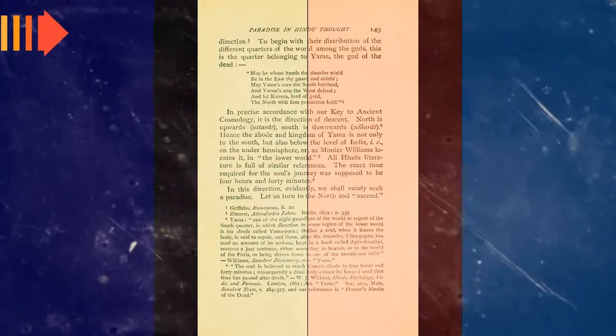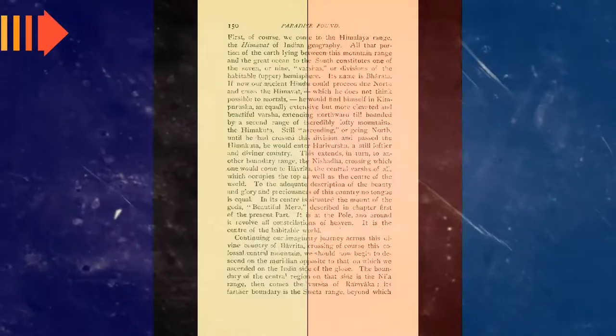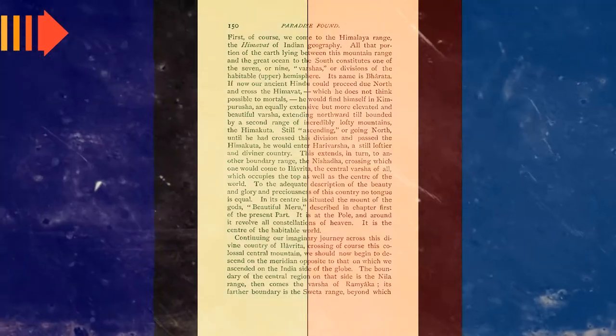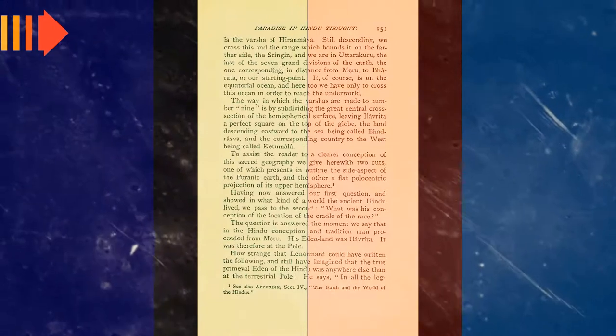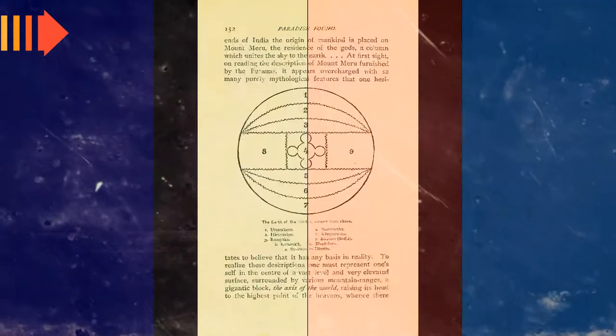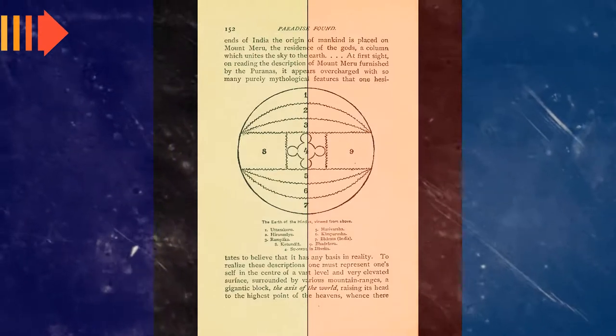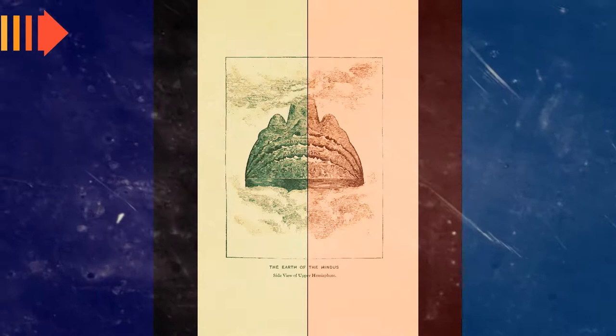The logographer Hellanicus of Lesbos wrote an earlier work entitled Atlantis, of which only a few fragments survive. Hellanicus' work appears to have been a genealogical one concerning the daughters of Atlas. Atlantis in Greek means of Atlas, but some authors have suggested a possible connection with Plato's island.